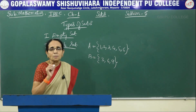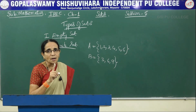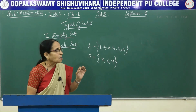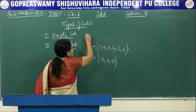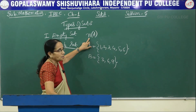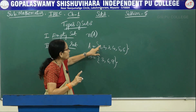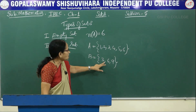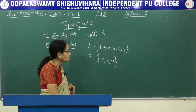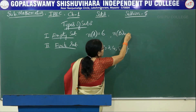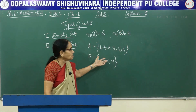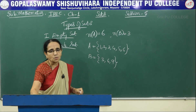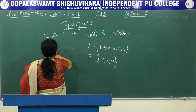In the case of a finite set, the number of elements present is called its cardinal number. We write it as n(A). For set A = {1, 2, 3, 4, 5, 6}, n(A) = 6. For set B = {3, 6, 9}, n(B) = 3. Depending upon how many elements are present, n of that set gives the exact count. This is called the cardinal number of the finite set. For an empty set, the cardinal number is zero.